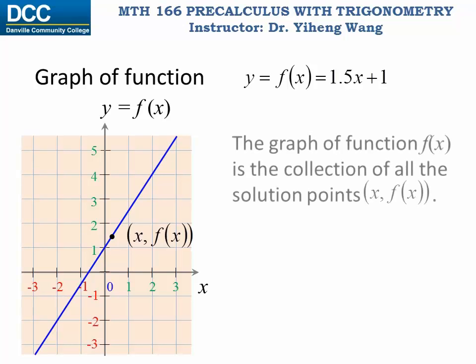And the graph of the function is the collection of all the solution points (x, f(x)). For example, for this point with coordinates (2, 4), it indicates that the function value evaluated at x equals 2 equals 4.